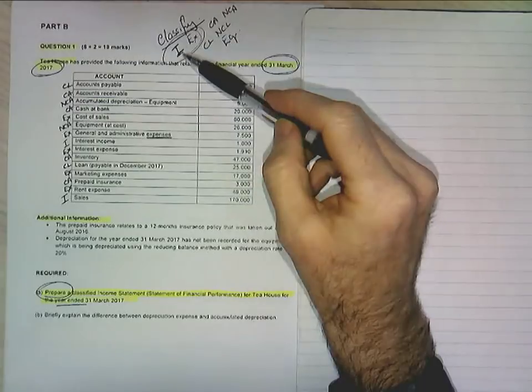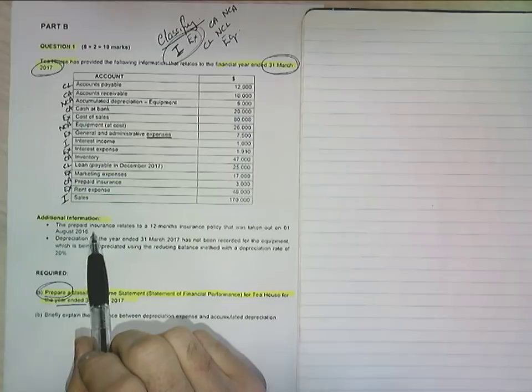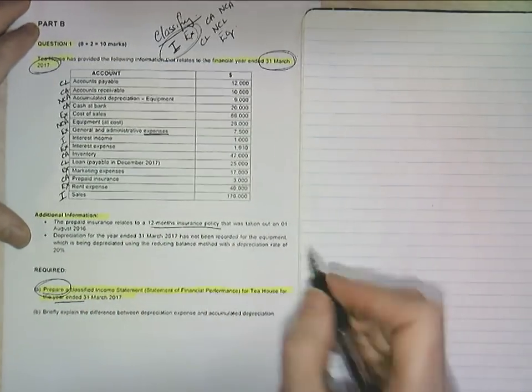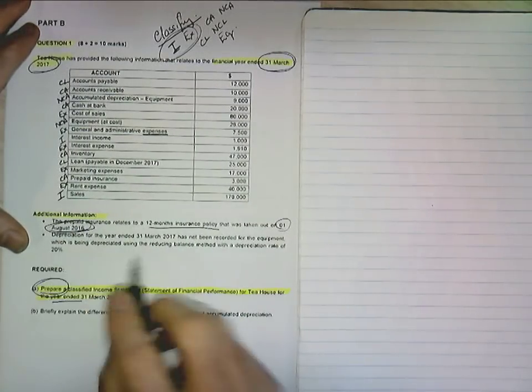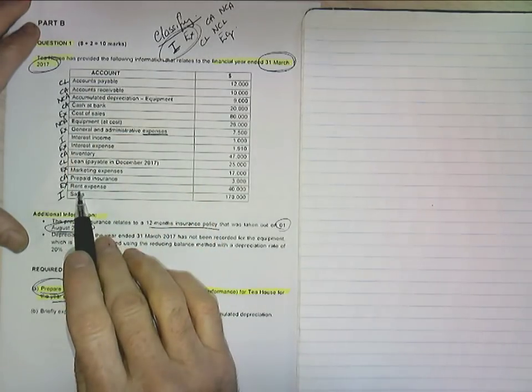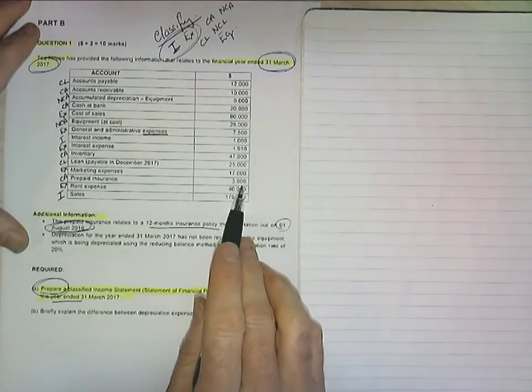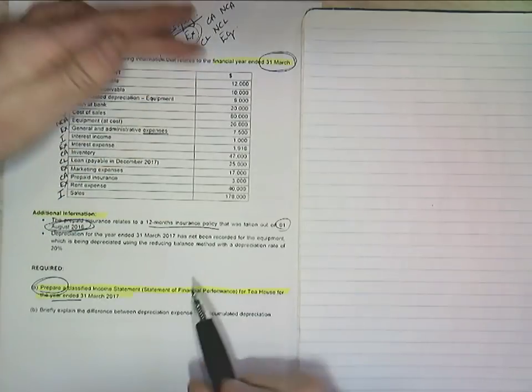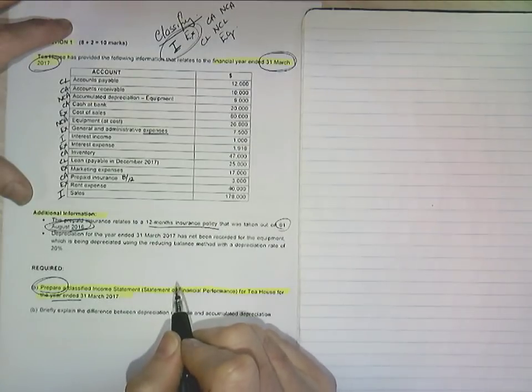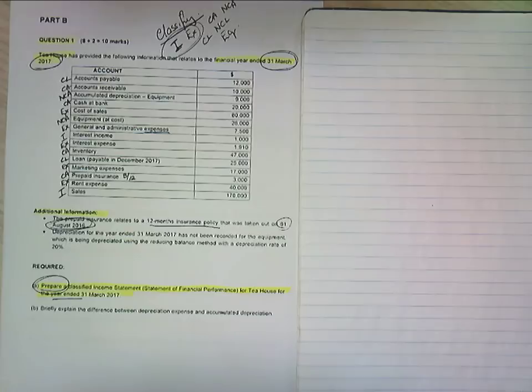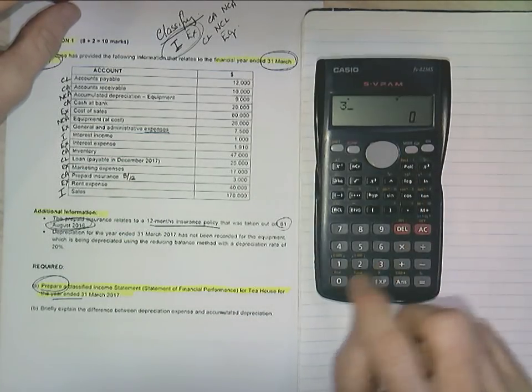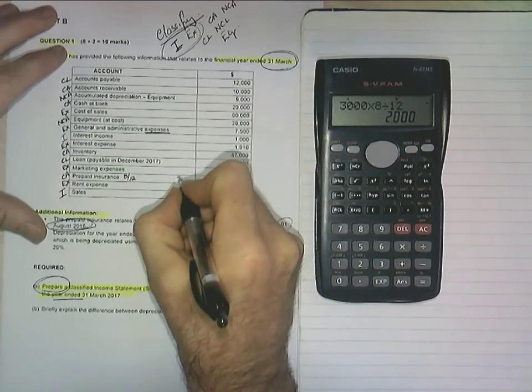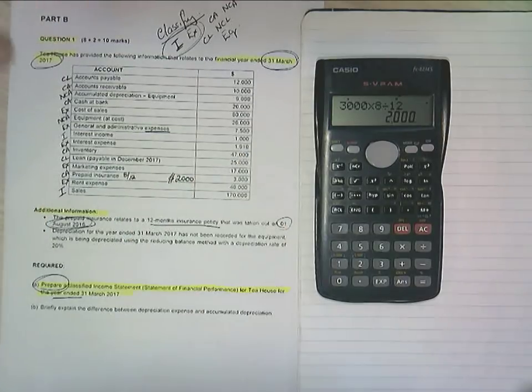So the first things we've done is our classifications. Now, the only ones we want to pick up from here are, as I said before, my income and my expenses. So, but I'm going to look now at my additional information to see if that's going to change anything of the information up here. And it says my prepaid insurance relates to the 12-month insurance policy that was taken out on the 1st of August 2016. So it's a 12-month insurance policy. So, therefore, I haven't got any insurance expense up here. So I now know that I'm going to have to convert some of this into expense. And what have I got? I've got August, September, October, November, December, January, February, March. I've got 8 months. So, 8 twelfths. Now, this is going to be expense. So let's go. Where's my calculator? I've got, where are we? 3,000 times 8 divided by 12 gives me $2,000. So $2,000, and this is the expense. So I've got $2,000 of that at that expense.